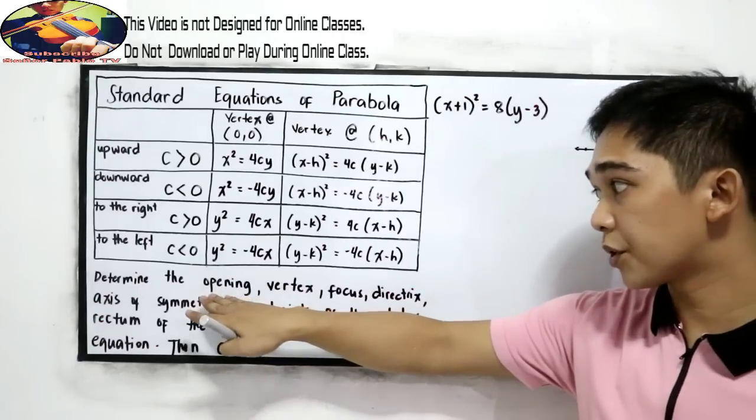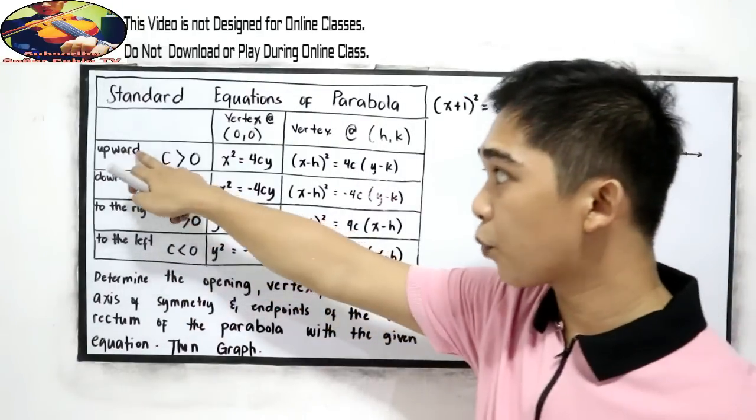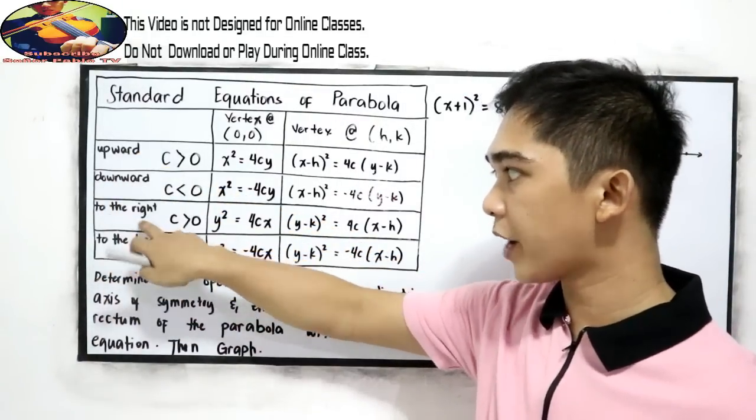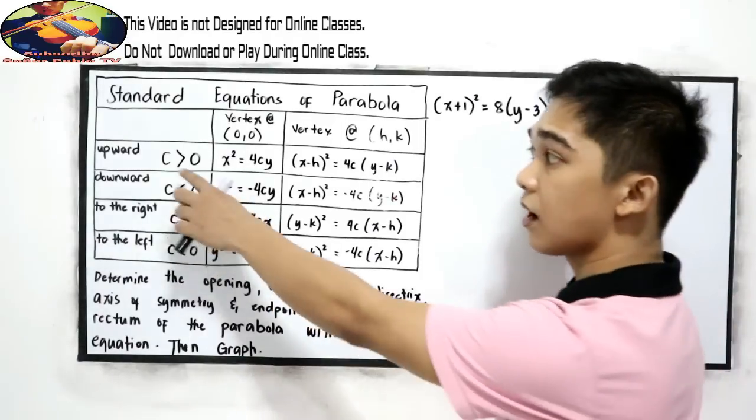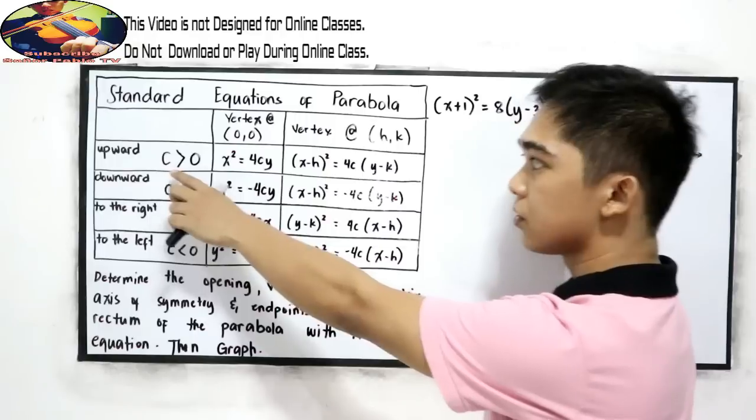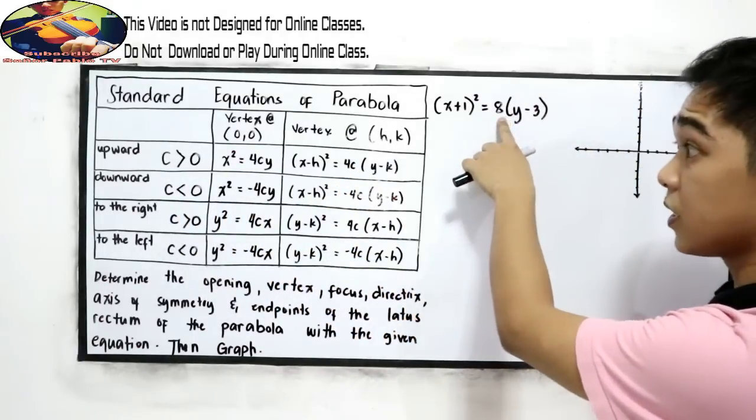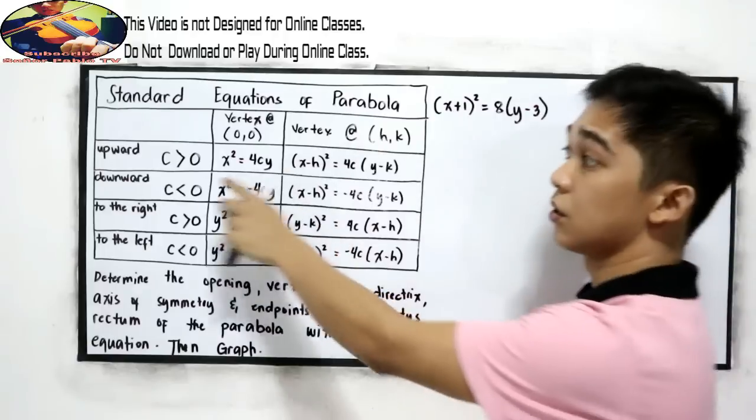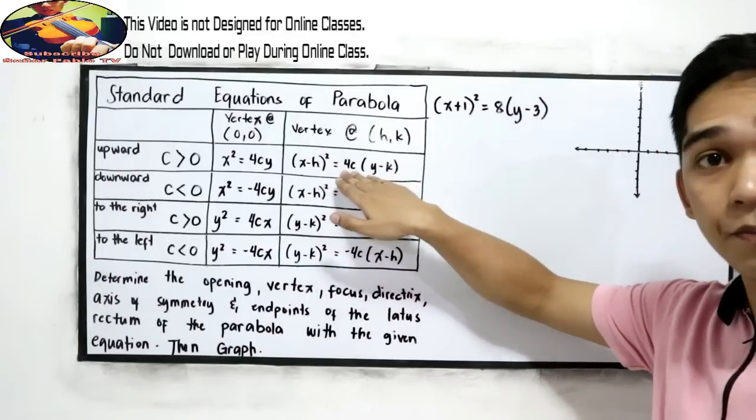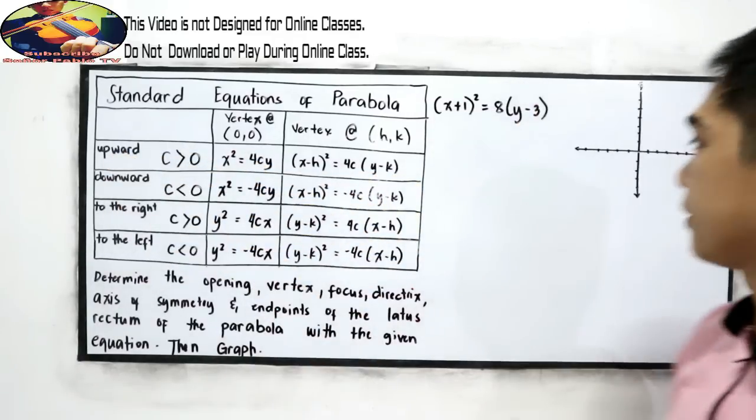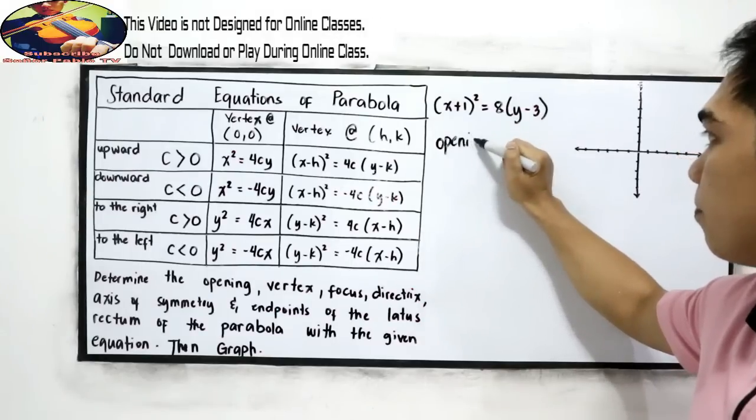First, we're going to determine the opening, whether it is upward, downward, open to the right, or open to the left. Our basis is our c. So in this case, c is positive, that is greater than 0, that means it's in this form, that is upward. So opening: upward.